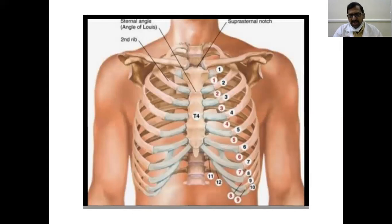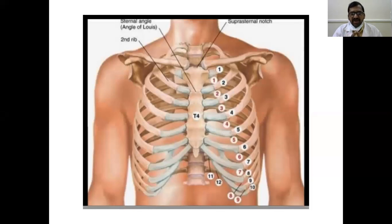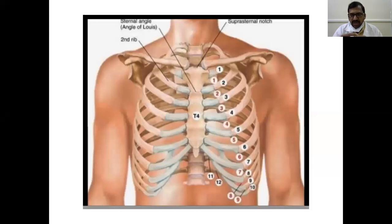The 12th rib is also special and clinically important. A typical rib has a head, tubercle, angle, and costal groove. In the 12th rib, there is no angle, no costal groove, and no tubercle. The 12th rib also provides attachment to important back muscles of the abdomen, especially the quadratus lumborum. You must be in a position to identify the 12th rib and know its attachments.